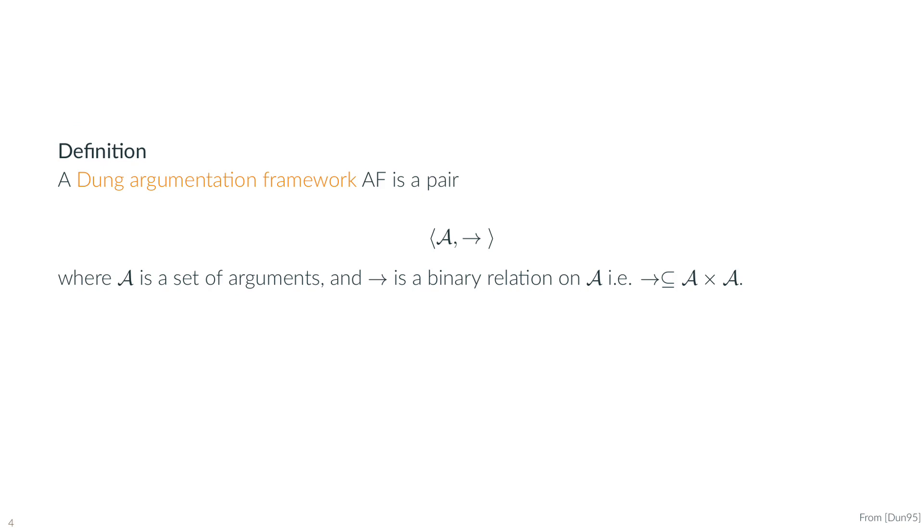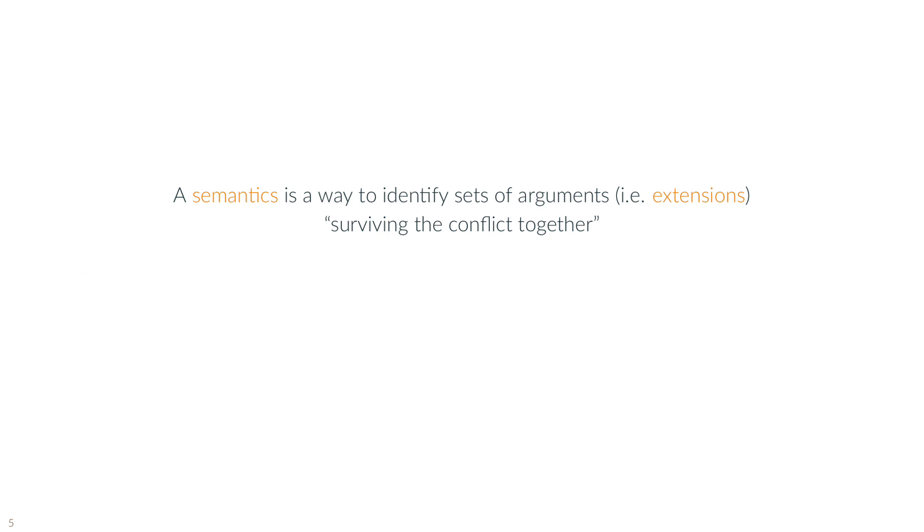Dung's Argumentation Framework is the fundamental reference of the community of argumentation and artificial intelligence. It is composed of a pair of elements, where the first one is a set of arguments and the latter is a set of attacks insisting over arguments. Arguments are the atomic elements in this framework. Therefore, the main goal of reasoning with such a framework is to identify a set of arguments that can survive the conflicts together.